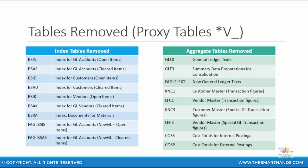Let's look at some of the legacy index tables like BSCS, BSAS, BSID, BSAD — these are all relevant to GL open items, customer open items, and vendor open items — as well as some of the new GL open item tables such as FAGL_BSIS, FAGL_BSAS, and so on. All of these will no longer be necessary in S4HANA because they will all be available in the universal journal table ACDOCA.